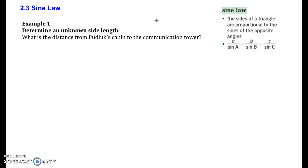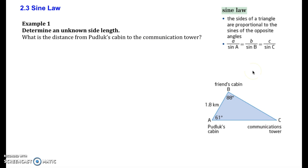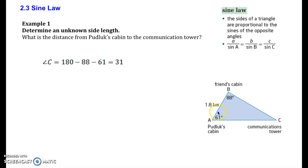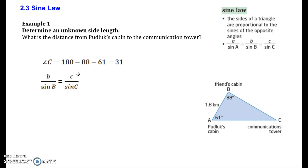Let's take a look at our first example. It says what is the distance from Pudluck's cabin to the communication tower, and we're given this as a diagram. We can see here's Pudluck's cabin and we want to know what the distance is from here to the communication tower. We're given an angle at B and A as well as a side length A. First, what we're going to do is determine what that third angle is — we need that in order to get the angle that's across from the given side, otherwise we don't have enough information. We determine that to be 31 degrees at C.